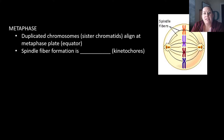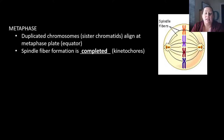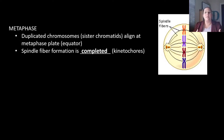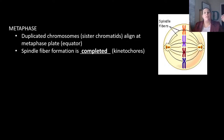In metaphase, these duplicated chromosomes — those sister chromatids — align at the center of the cell. This is known as the metaphase plate or the equator of the cell. Spindle fiber formation is also complete at this point, with the spindle fibers connecting to the chromosomes at structures we call kinetochores. Think of it like a harness connecting a line to you while rock climbing — they're connecting into those chromosomes to get ready to move them.